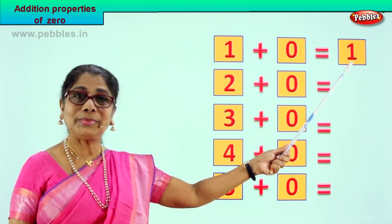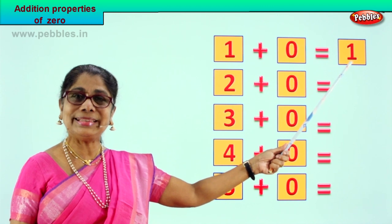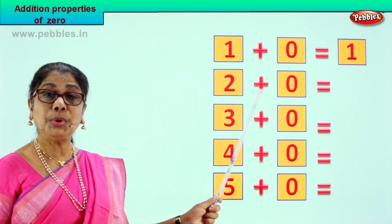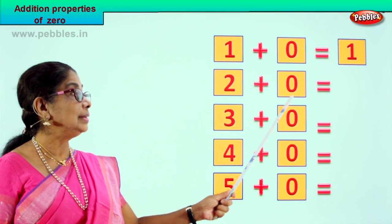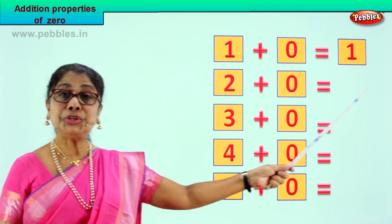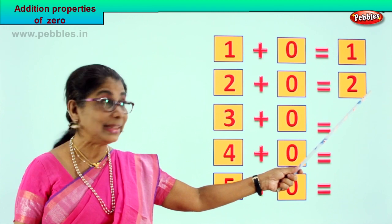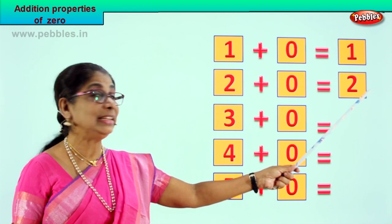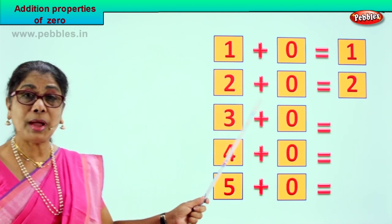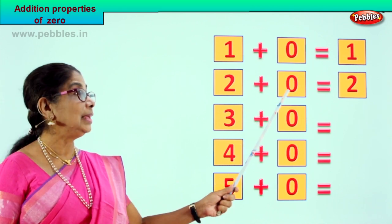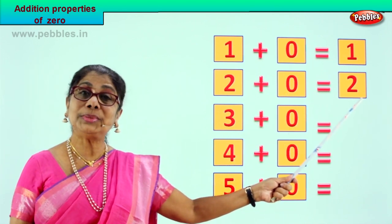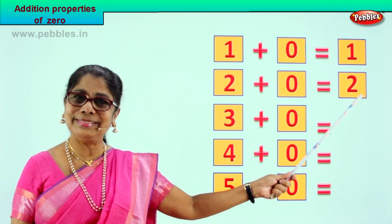Let's take the next sum. Read with me: two plus zero is equal to two itself — the number itself. Very good. Two plus zero is equal to two, the number itself. Good.